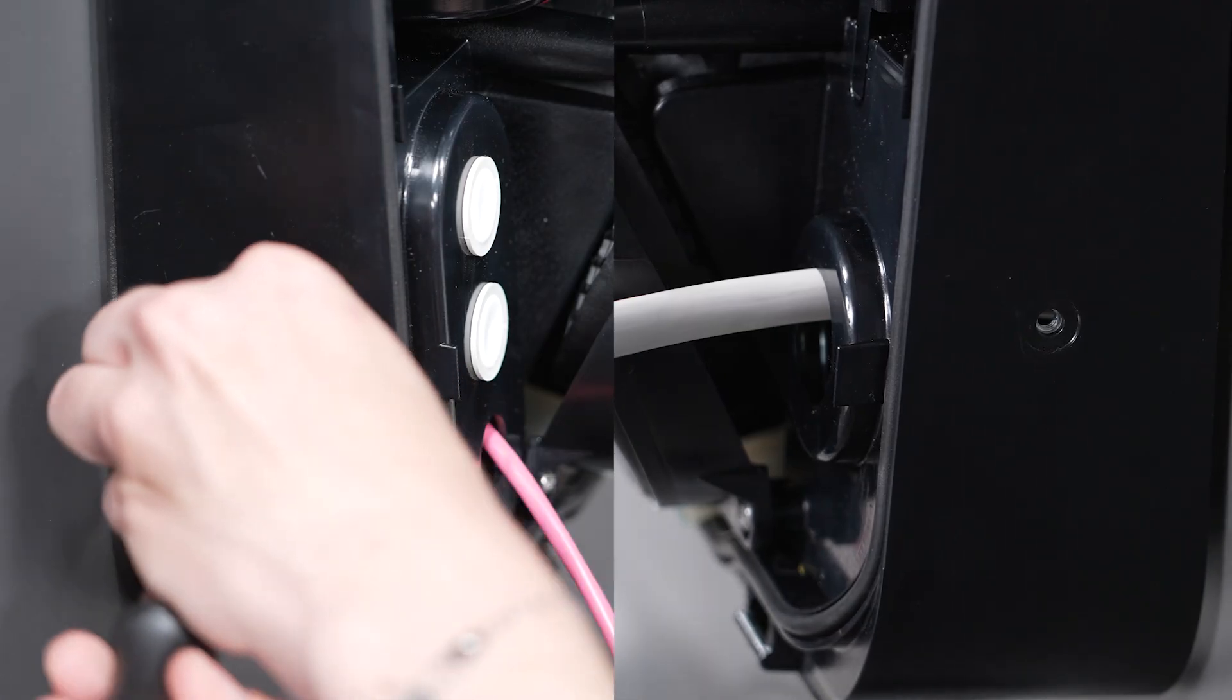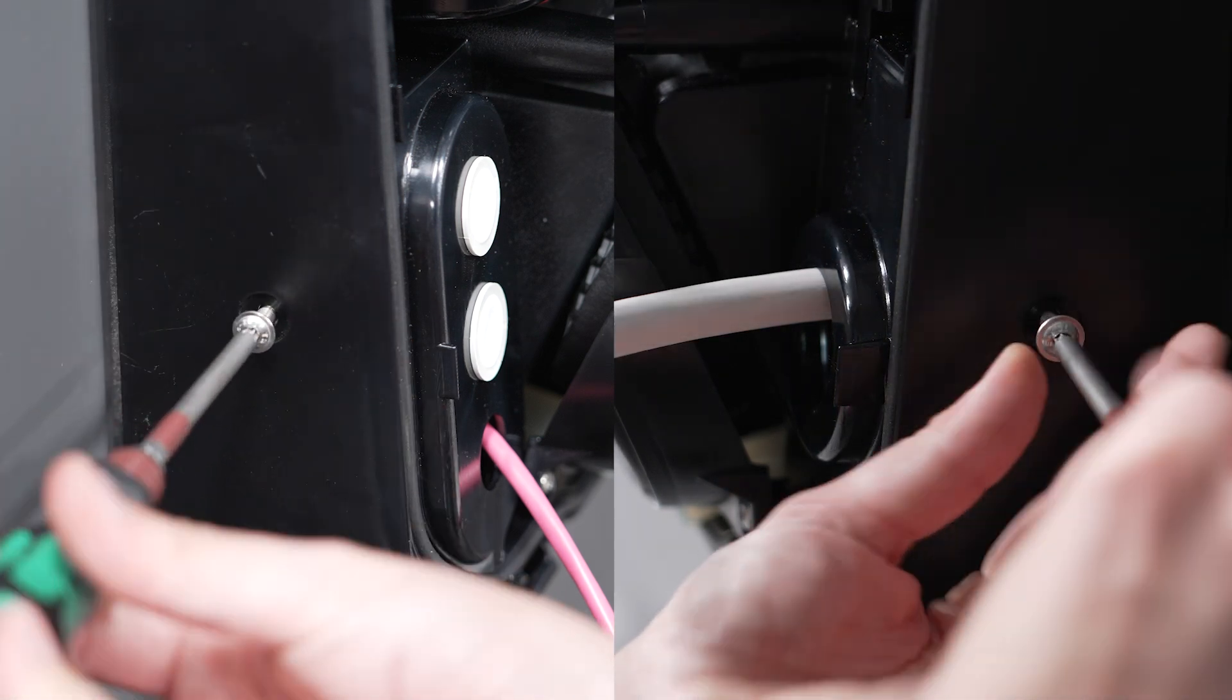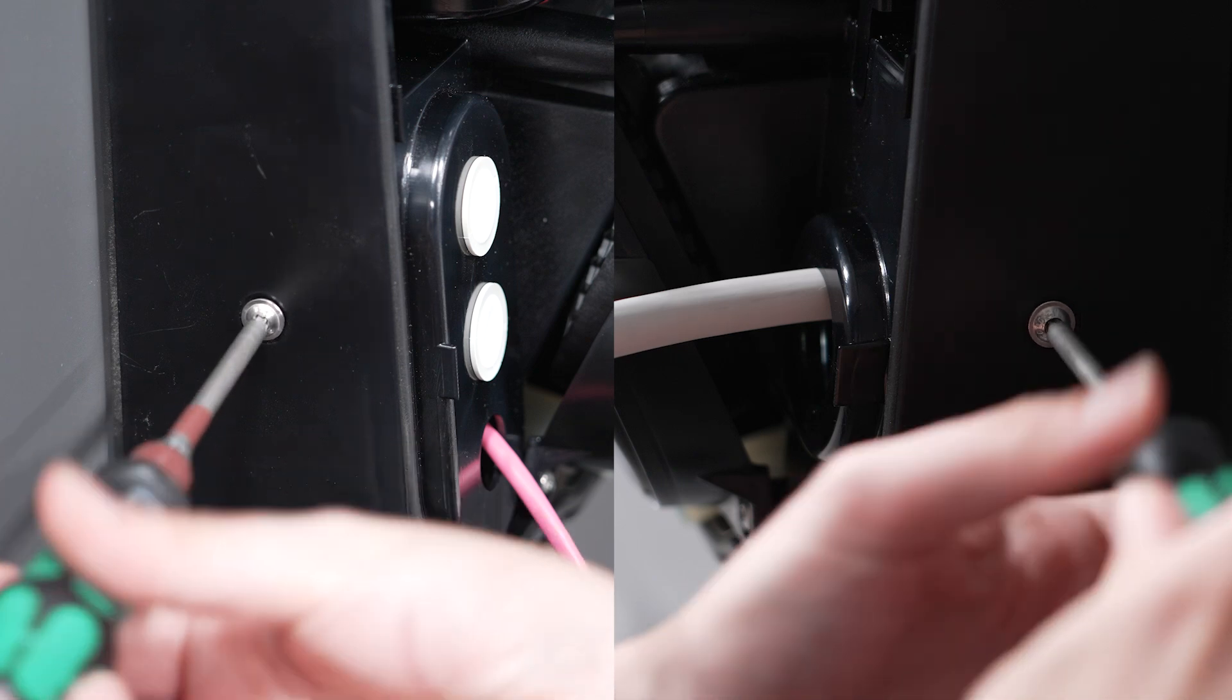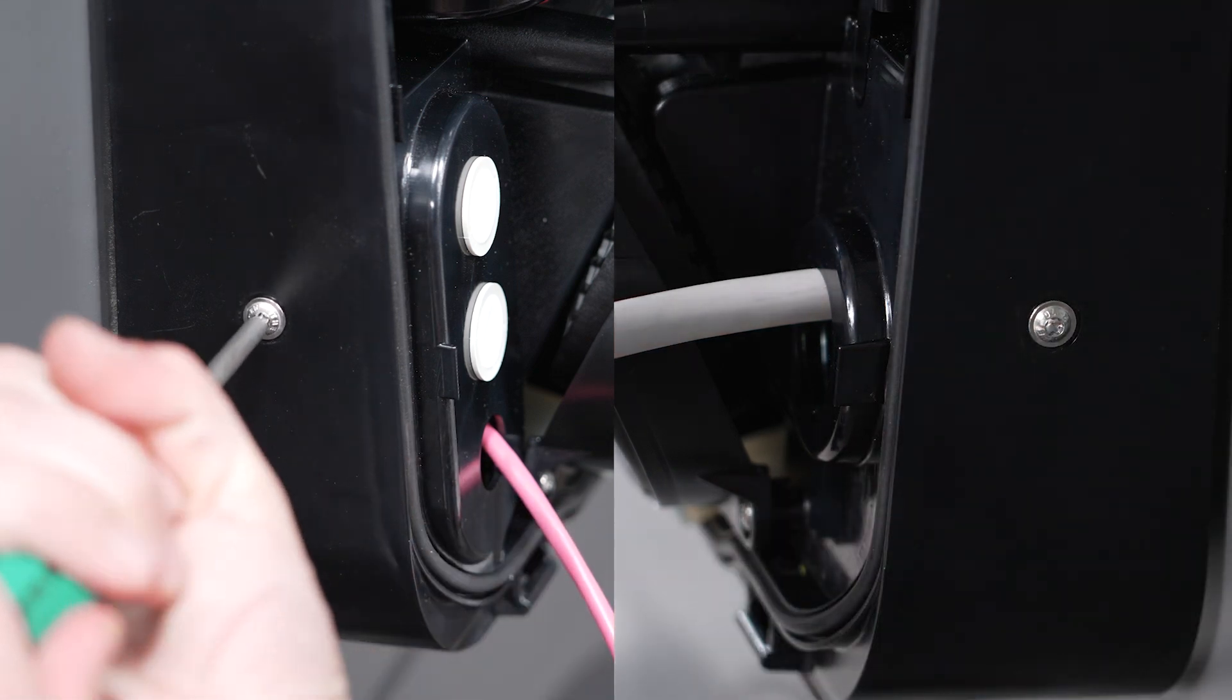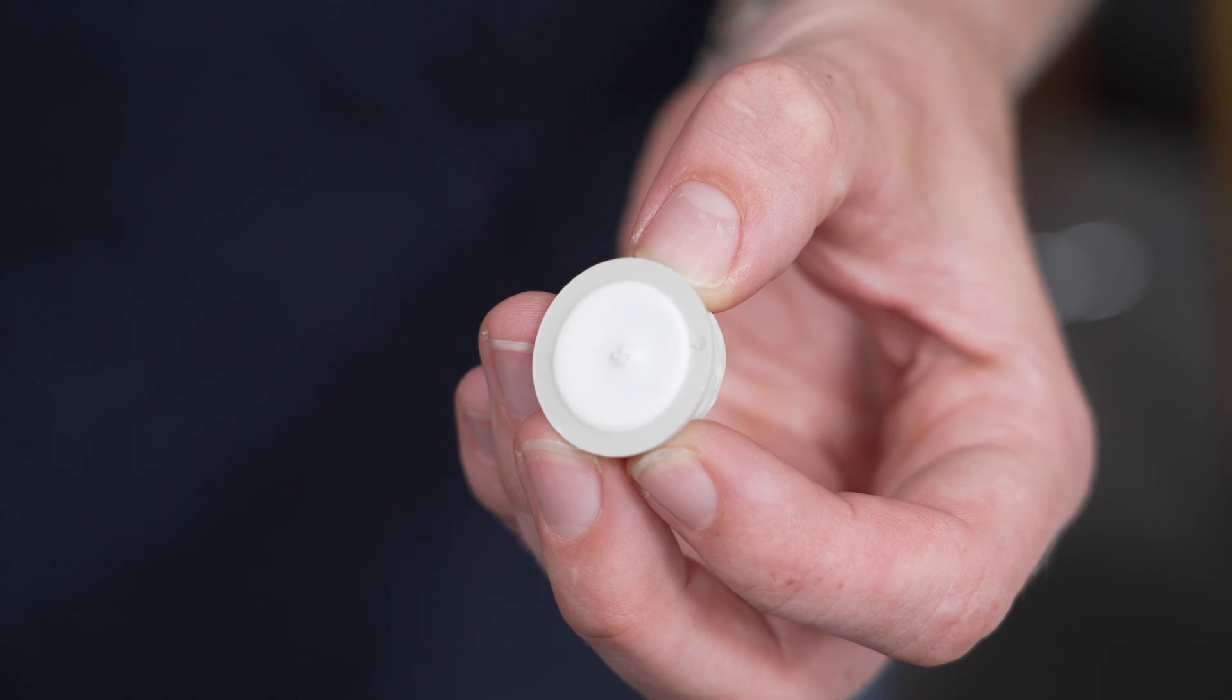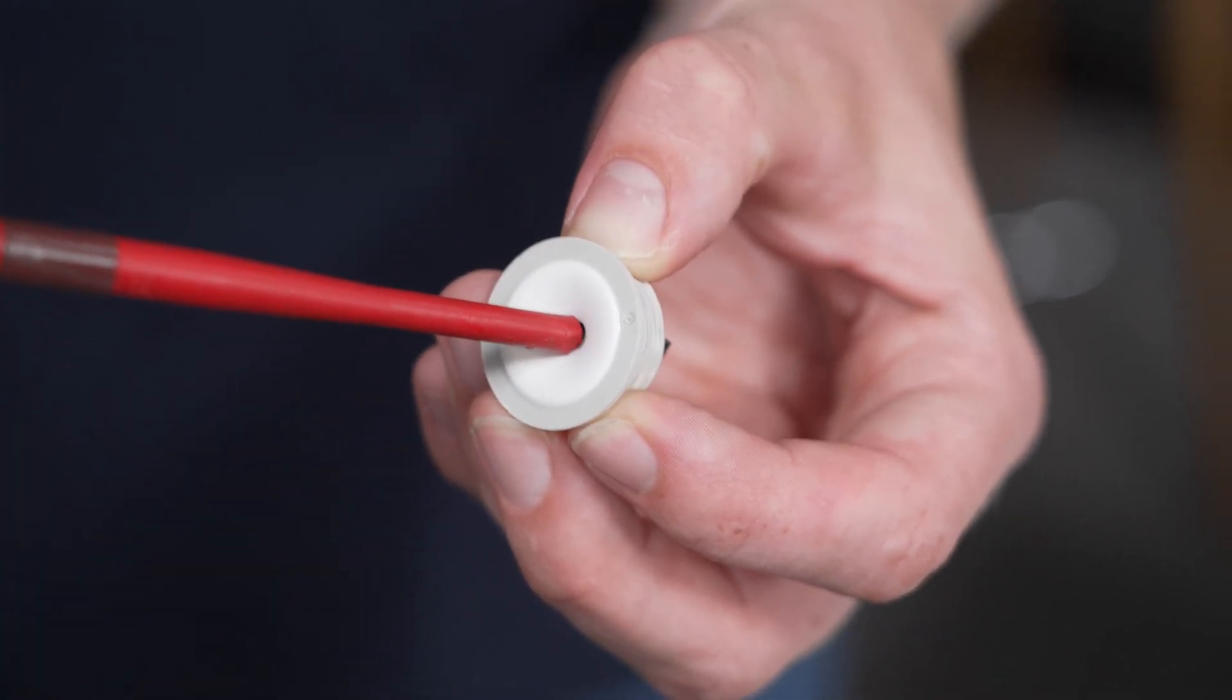Then secure the device on both sides with a screw from the accessory pack to prevent it from being levered out. Pierce the previously removed membrane of the grommet with a pointed object. I use a screwdriver.